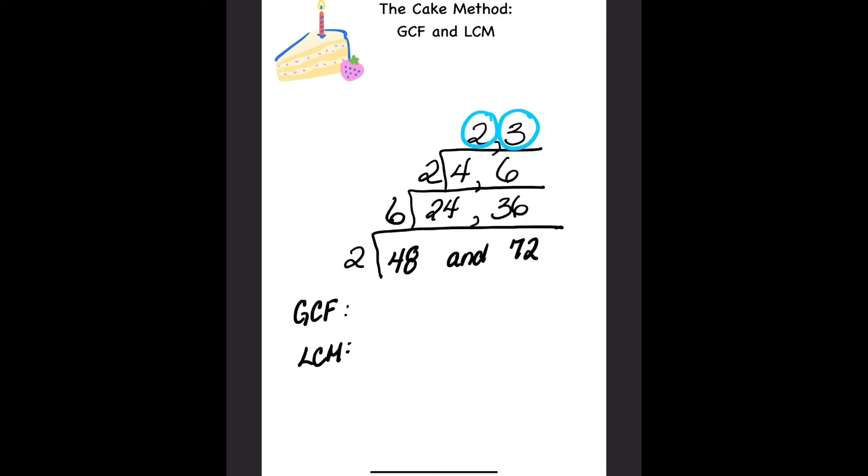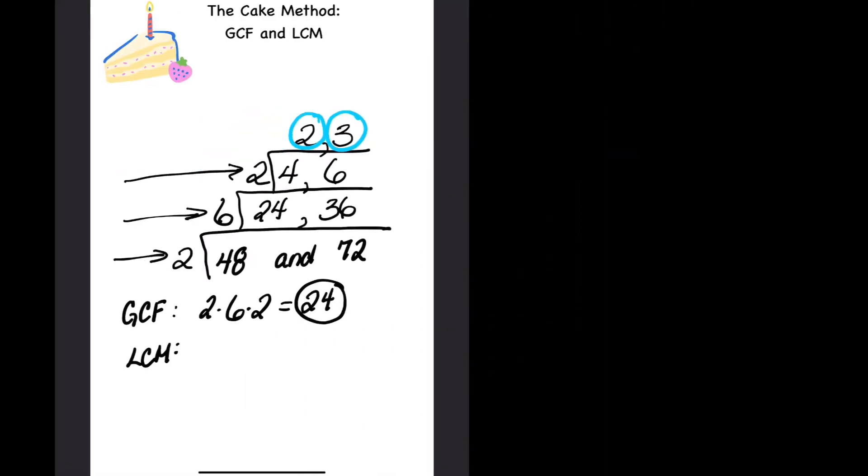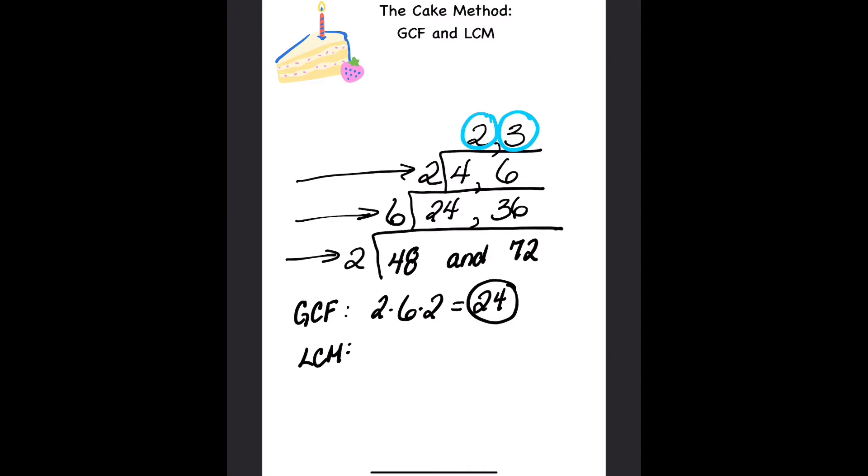To find the greatest common factor, simply take these three numbers, these are the factors you divided by here on the outside, and you're going to multiply them together to get your greatest common factor, 24. To find the least common multiple, you're going to take those factors again and you're going to multiply it with these here on the top.